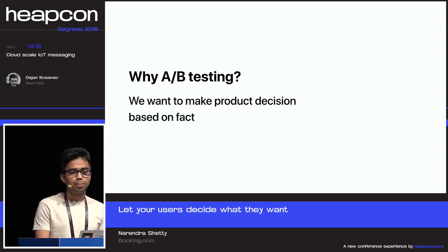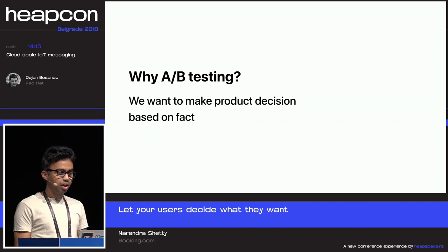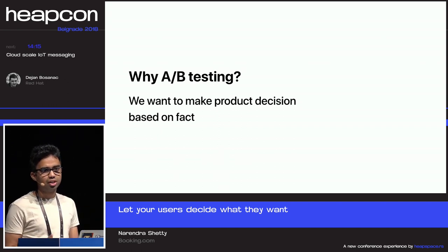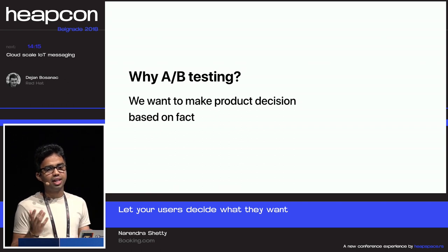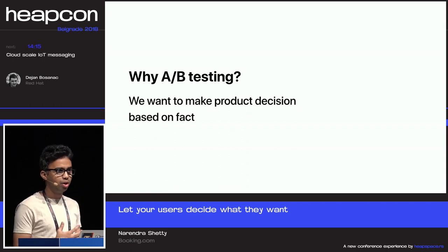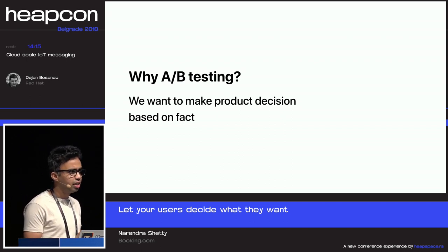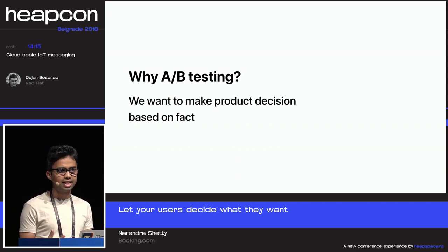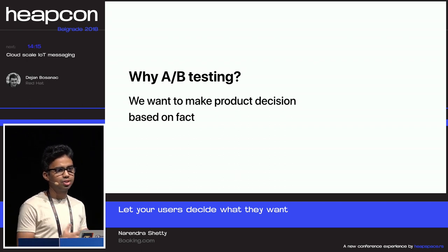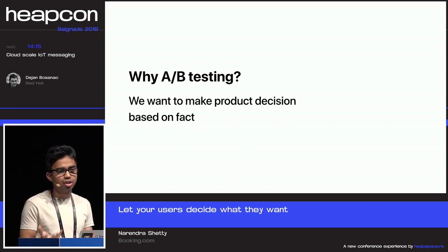We want to make product decisions based on facts. Let's say your CEO comes and tells you to make the logo bigger. The only way to find out whether that really works is measuring the old logo against the new logo to see which one improved. There's no gut feeling here, no my word against yours. Data really helps you decide whether to go with A, the base, or B.